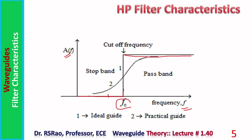In practice, when frequency is slightly less than fc but near to it, the signal is allowed entry into the waveguide and can pass a certain distance — attenuation is not infinity as in the ideal case. Also, for frequencies slightly above fc but near it, attenuation is not zero as ideally expected. So in actual waveguides, the characteristic is a curve somewhat similar to a step, not a pure step.